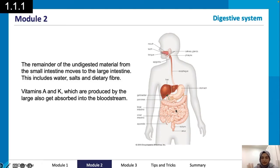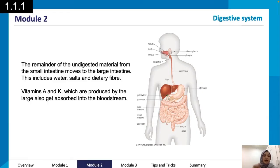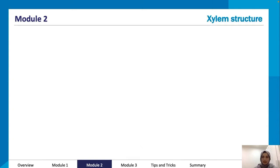The remainder of digested material from the small intestine moves into the large intestine, including water, salts, and dietary fiber. Vitamins A and K are produced by the large intestine and also absorbed into the bloodstream.